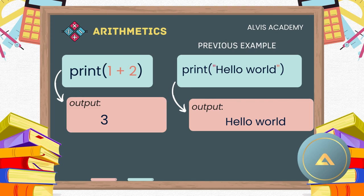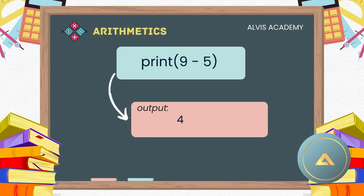numbers. We do not need to use quotation marks. Another thing that we can do is we can also do subtraction in Python. For example, let us subtract nine minus five. It will bring us four. The code cell will look like this.